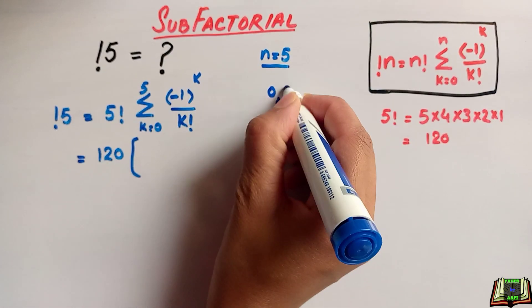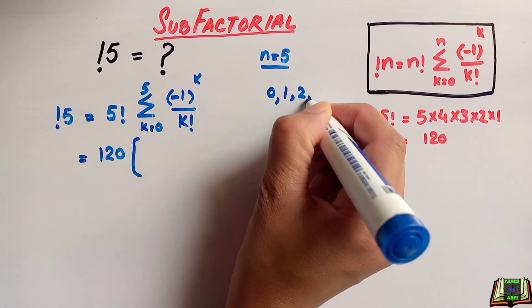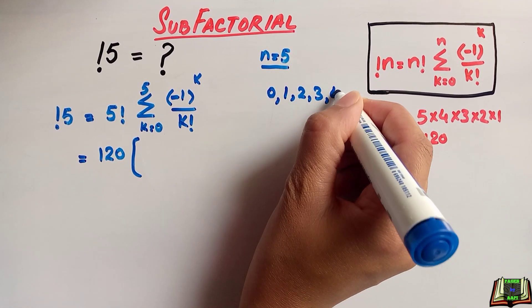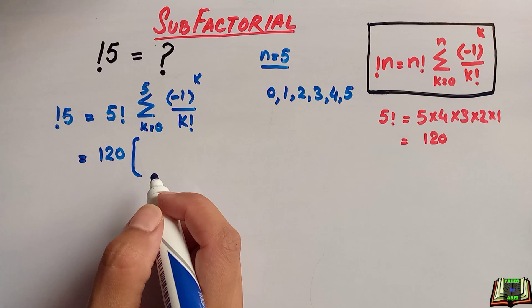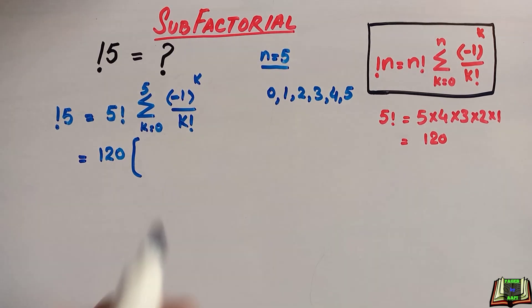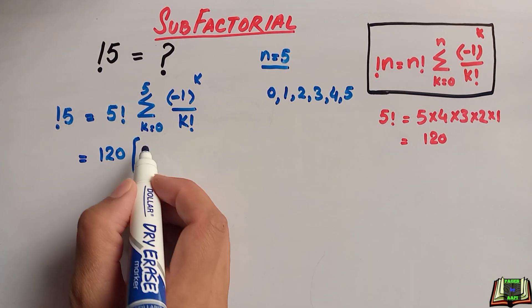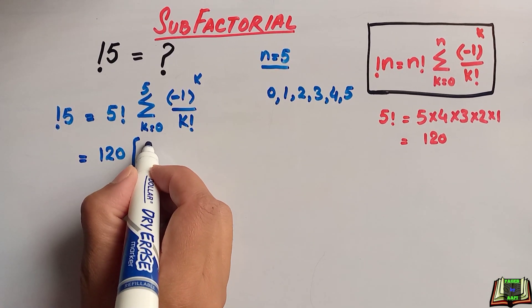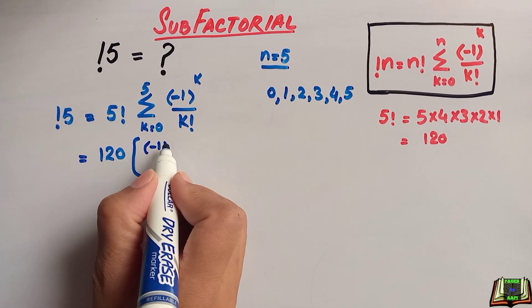The value of k will be 0, 1, 2, 3, 4, and 5. Sigma means add or sum, so we will start writing out each term.